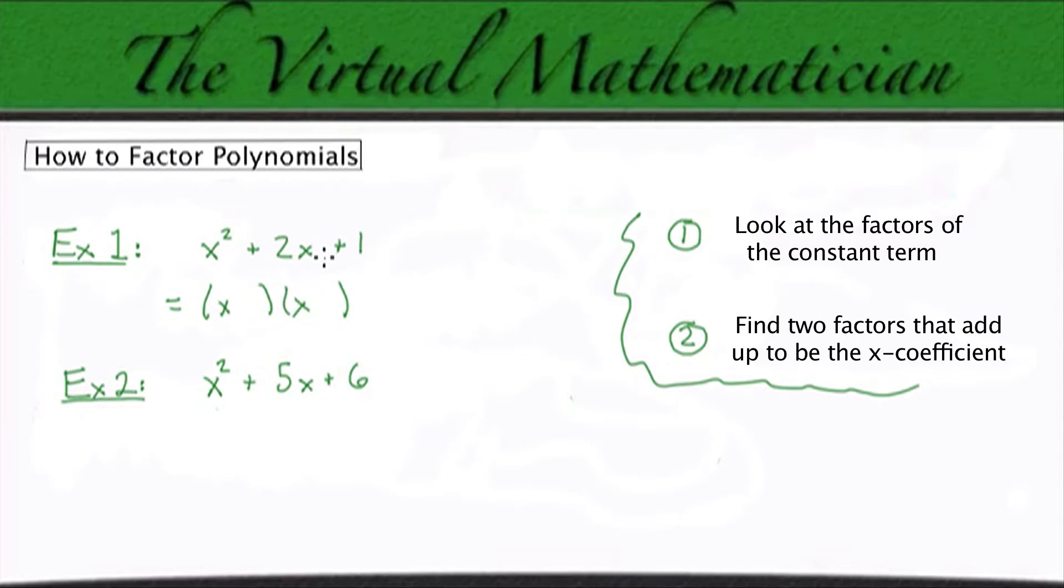So in example one here, the constant term is a one. So the only factor of one is itself. So does one plus one equal two? Well yes it does. So this is going to factor nicely into x plus one times x plus one.